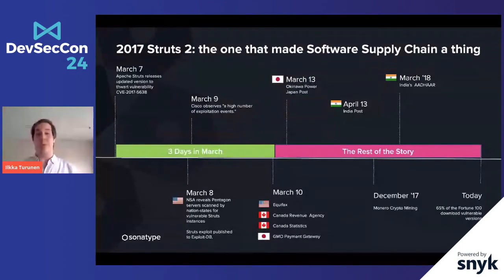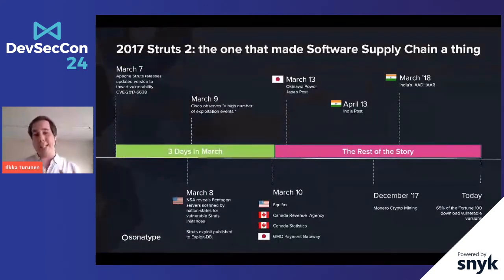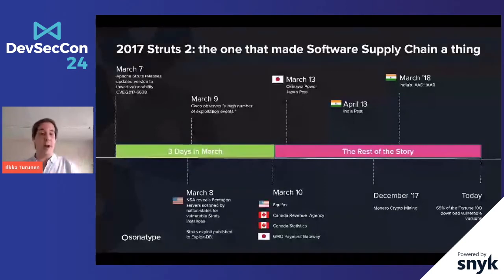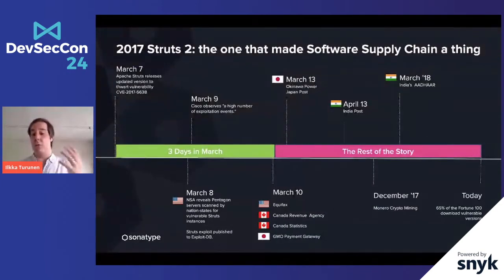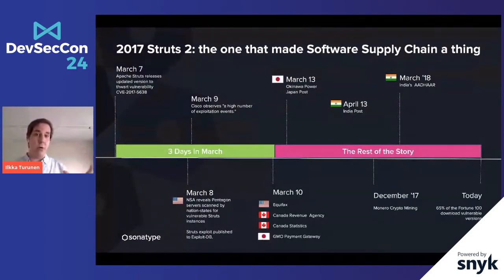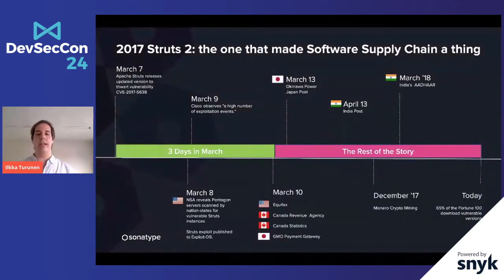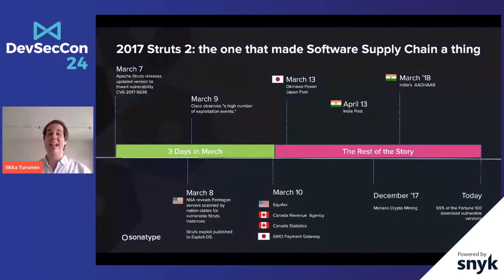On the same day, exploitation code for that security vulnerability was published onto ExploitDB, and there was also a proof of concept on GitHub. By March the 9th, Cisco later reported seeing a huge number of exploitation events running through networks — packages blindly trying to find servers with this vulnerability. On March the 10th, several well-known names were exploited, Equifax being one of the better known ones. Three years later, that was recognized as one of the biggest data leaks of the decade. Less well known is that there were several other victims, including the Canadian Revenue Agency, the Okinawa Power Agency in Japan, and the Aadhaar system in India.